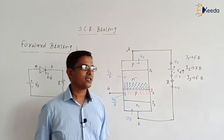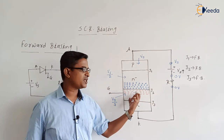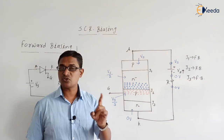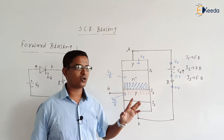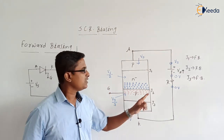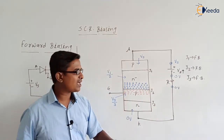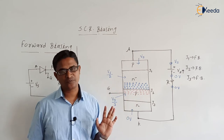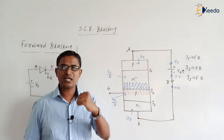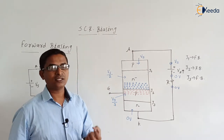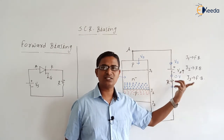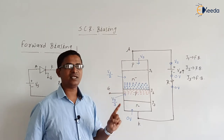When the SCR is in forward bias mode and the gate-cathode circuit is open, we can turn on the SCR, but it requires a very high voltage — because that high voltage causes the breakdown of the depletion layer across J2. In coming videos we will discuss the turn-on methods of the SCR. The first method is forward voltage triggering: keep the gate-cathode circuit open and apply a high voltage.